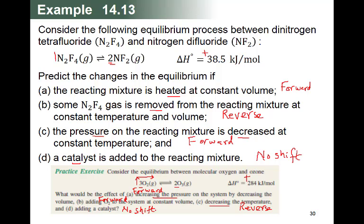For part (d): adding a catalyst — no effect, no shift. This is the end of the module. I hope you understand Le Chatelier's principle. It was the most difficult topic of this module because it has no calculations or formulas — it needs only your understanding of chemical engineering, which is called process control. I hope this video makes your understanding very easy.